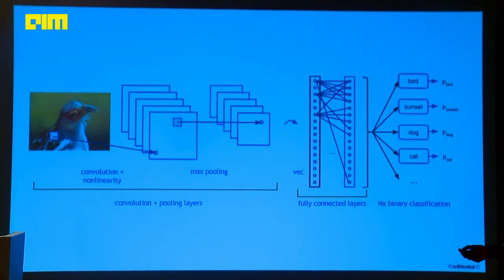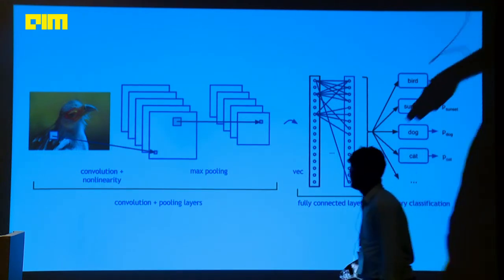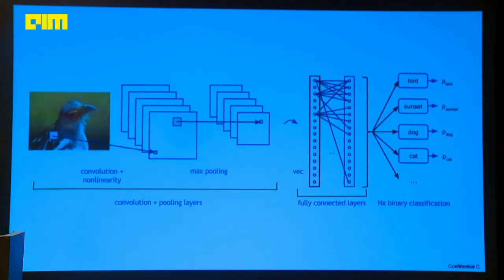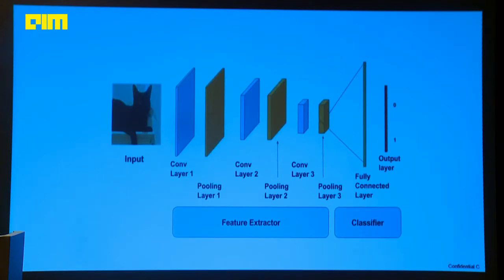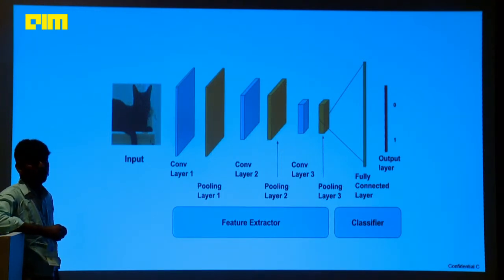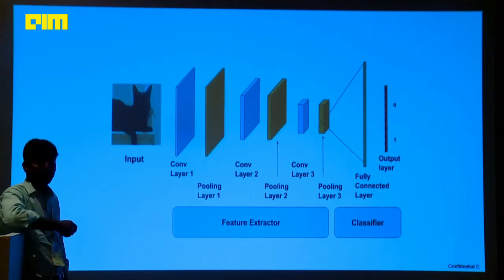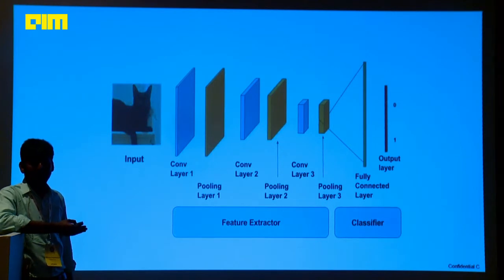In plain neural networks there is no feature extraction happening — it just performs classification. But in CNN, we apply convolutions followed by pooling layers, and then it goes to the fully connected layers. The right part — the hidden layers and output layer — we have seen already. Now we are going to learn what exactly happens with the convolution and pooling layers. The first layer must always be the convolution layer. Then you can have a pooling layer. Pooling cannot be placed before convolution. Each convolution layer also has activation functions.